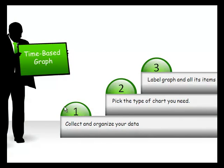The first step in the process is going to be collecting and organizing your data. That's going to be the important step because you want to make sure you get it into the Excel spreadsheet in the proper format. Next you're going to pick the type of chart you'll need, and that can be a little bit tricky depending on what it is that you're trying to do with it. And then finally once you have the right chart you'll need to label the graph and all its items.